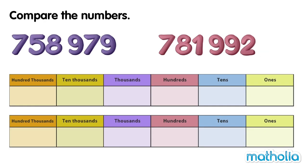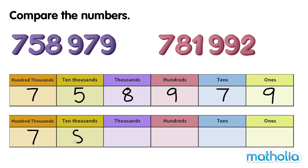Let's compare 758,979 and 781,992. Start by writing the numbers in a place value chart. Now compare the digits in each place starting at the highest place value.